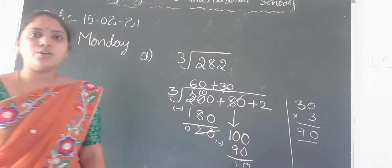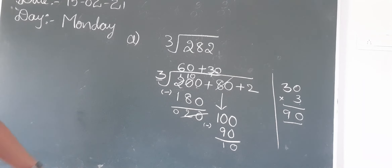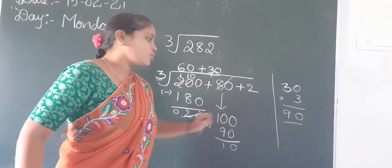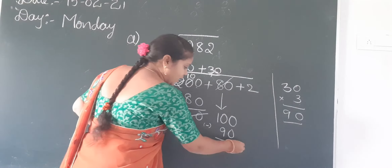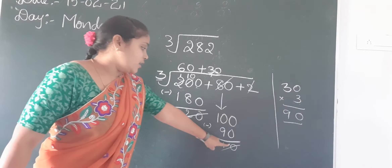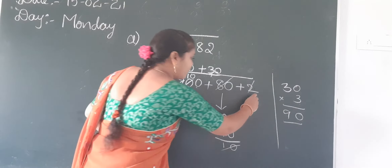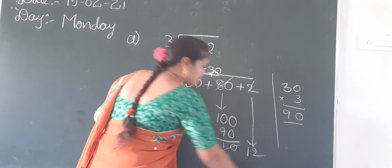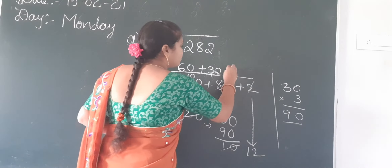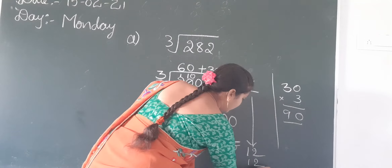Now what do we have to do? Add this 10 to the next number. 10 plus 2 is 12. Cross out this 10 and cross out 2 — why are we crossing out? Because we are writing the total here now. This 10 and 2 is 12. So 3 fours are 12.